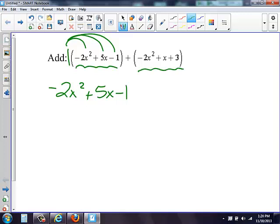Now I'm looking at the second polynomial. If I put a one there, it's like a positive one. Positive one times negative two x squared is negative two x squared. Positive one times an x is a positive x.